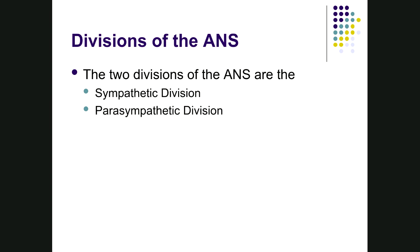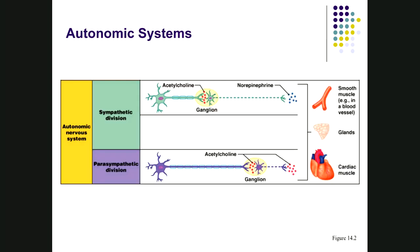The autonomic nervous system has two divisions: sympathetic and parasympathetic. Both are two-neuron systems — it takes two neurons to get from the central nervous system to the effector organ, which is always an internal organ such as smooth muscle. These neurons synapse in what's called the ganglion. The first neuron is the pre-ganglionic neuron and the second is the post-ganglionic neuron.